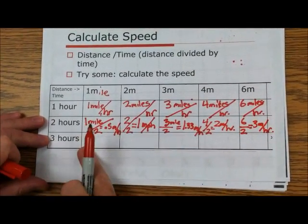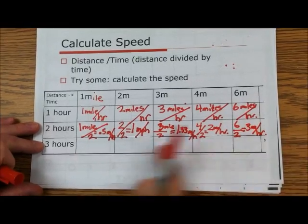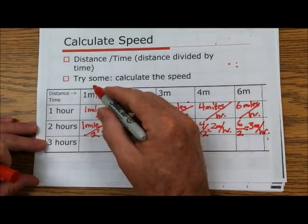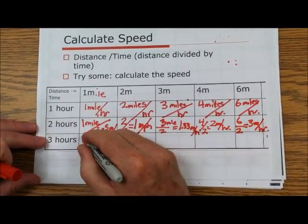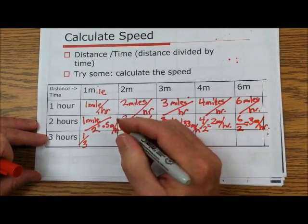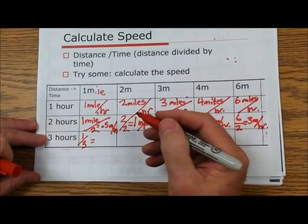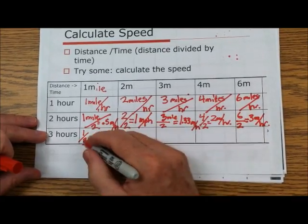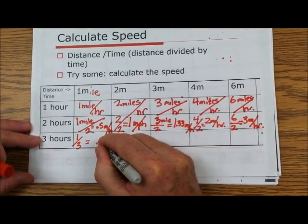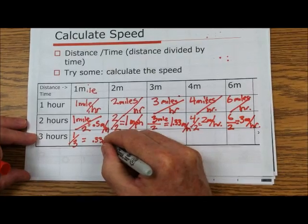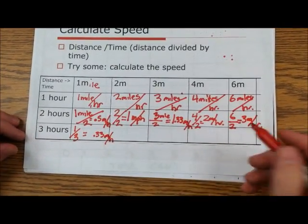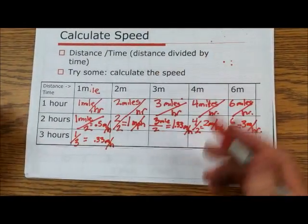Let's do this last one together. It is one mile divided by three hours — what is that equal to? One third is 0.33 miles per hour. Okay, so that's how that one works.